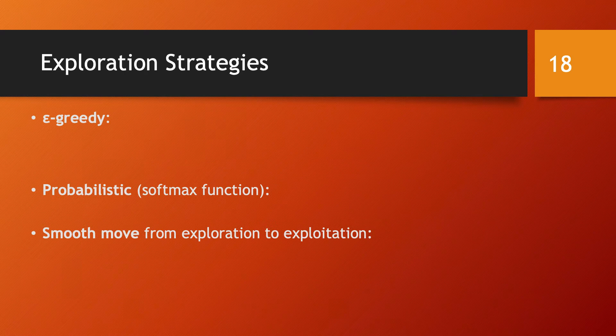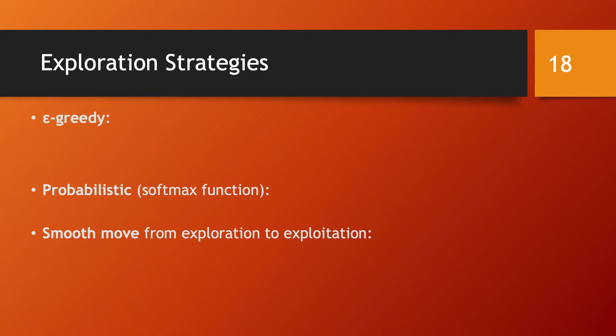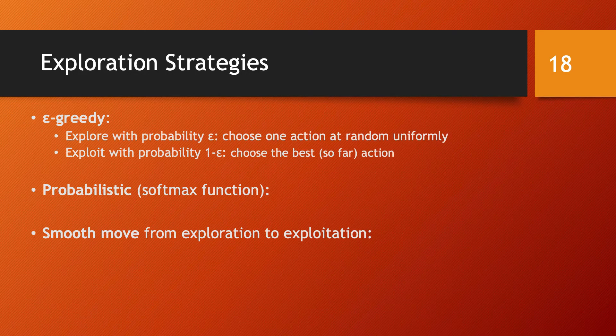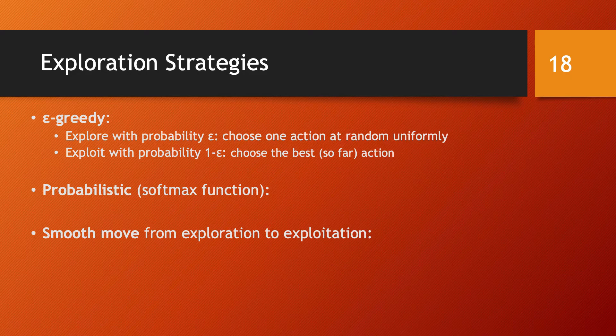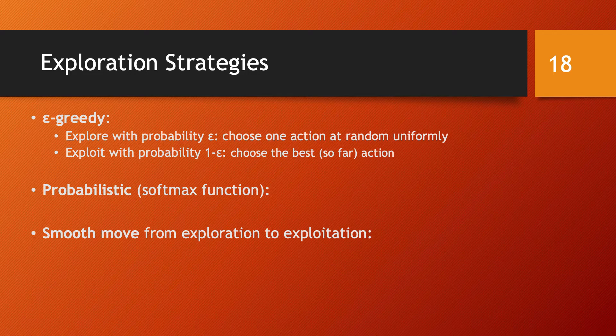There are two main types of exploration strategies, one based on a greedy strategy and the other one based on a probabilistic approach. In the greedy strategy, the point is that you will have a threshold epsilon and in each state you are going to decide with probability epsilon to explore and with probability one minus epsilon to exploit.